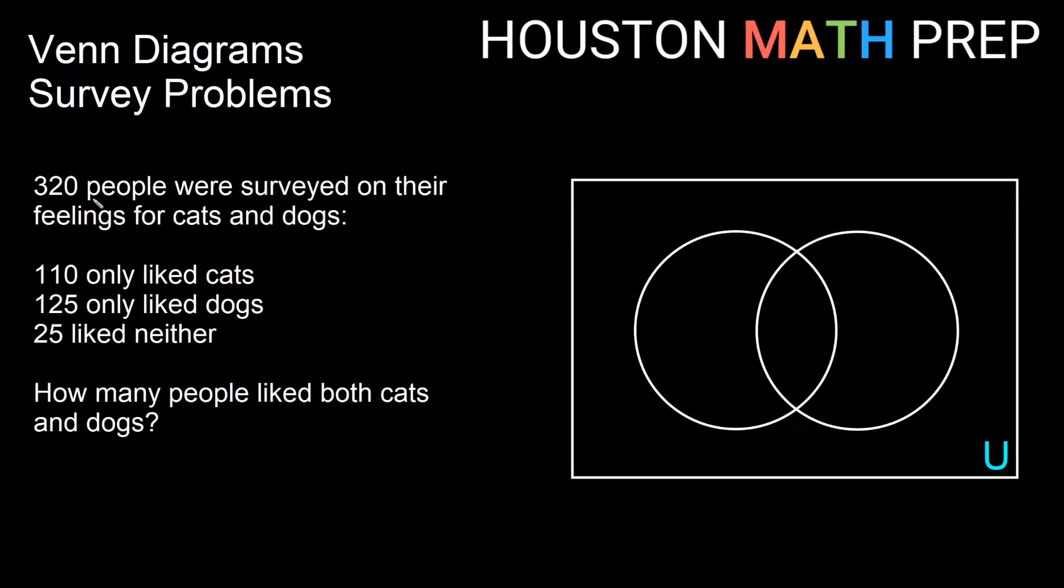So here we have another survey of 320 people. They were surveyed on their feelings of cats and dogs. So thinking about my sets here, maybe I label one C and one D for cats and dogs. Easy to interpret there. This top statement here says 110 only liked cats. If I only like cats, that means I'm not in the intersection. So that means I'm in the C circle, but I'm not in the intersection. So 110 is very specific. It should go out here in the C circle, not in the intersection. We can go ahead and place that one.